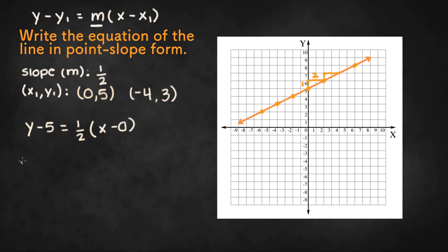And we could simplify this to y minus 5 equals 1 half x. And that's our first possible solution.